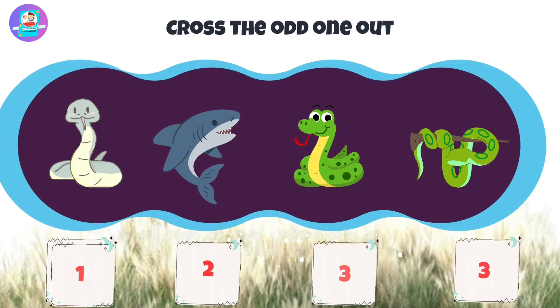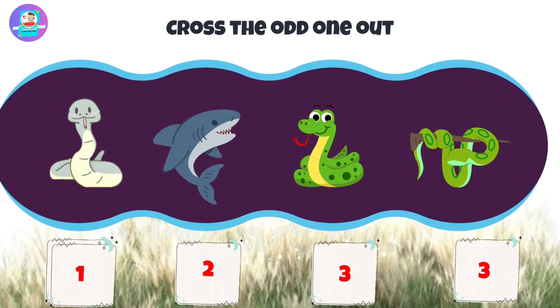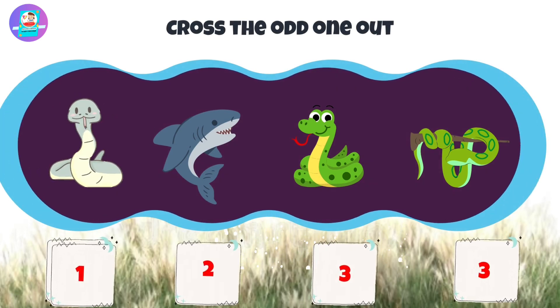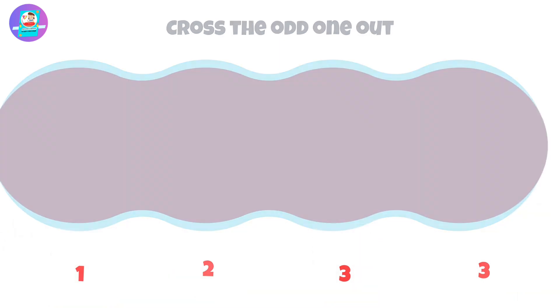Next, there are 4 pictures: 1, 2, 3, 4. Put the odd one out.